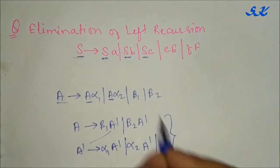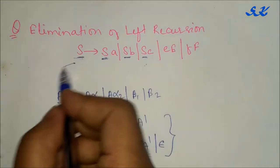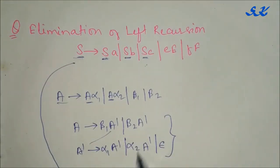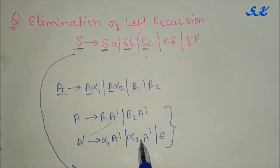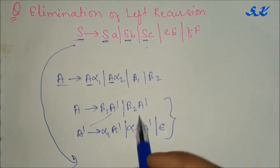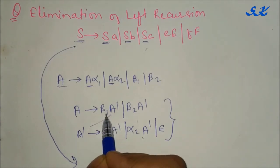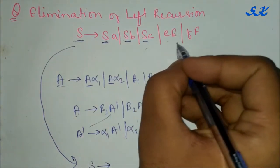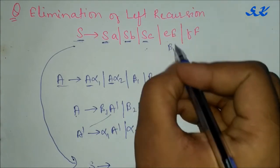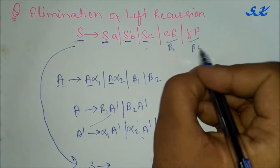So to solve this above question using this statement, we write as now S goes to beta 1 is E, F. So this is beta 1 and this is beta 2.